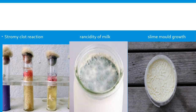This is how stormy fermentation occurs. We also see here rancidity of the milk and slime mold growth on the milk. That's all — we finish our topic on biochemical activities of microbes in milk.